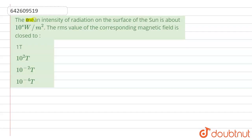Hello everyone, the question says that the mean intensity of the radiation on the surface of the sun is about 10 raised to power 8 watt per meter square. The RMS value of the corresponding magnetic field is close to.